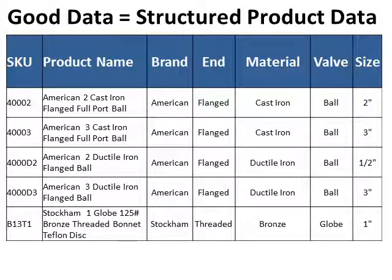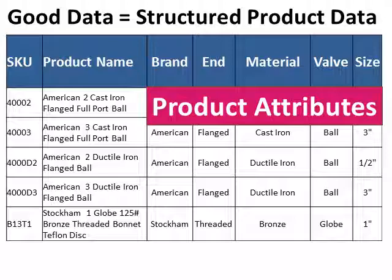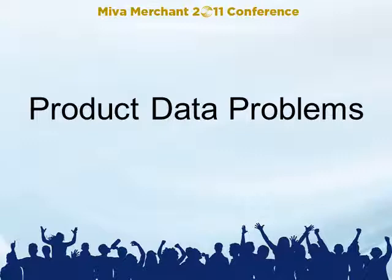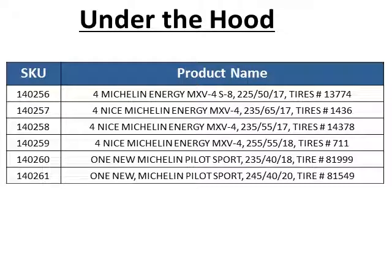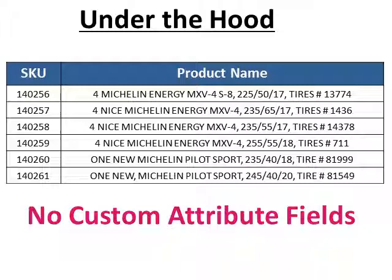Let's take a look at some websites that have data problems. Here is an example search for radial tires that provides no ability to filter your results. You can't filter by brand, type, size, or anything else. The customer must resort to clicking through 71 pages or try a more specific search. If your website has functional search capability but no way to filter that search, you may have a data problem. Looking under the hood, the data is just a very simple table with product name, SKU, and maybe a price or description field, but no custom attributes — no brand, no type, no size. This is what we call unstructured data, and it needs structuring.